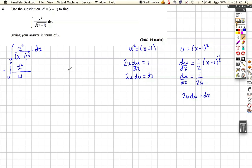And dx we can replace with 2u du. Now if we had limits we'd have to change our limits because the limits in the question would be in x, we'd have to turn the limits to u, but we haven't got that.